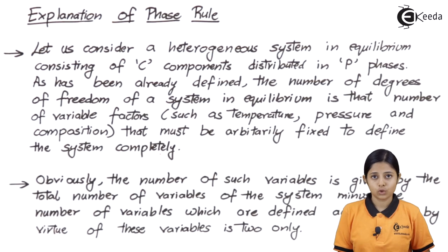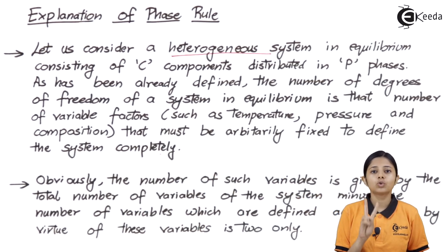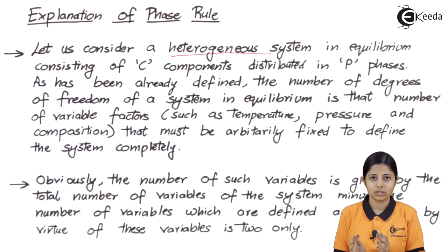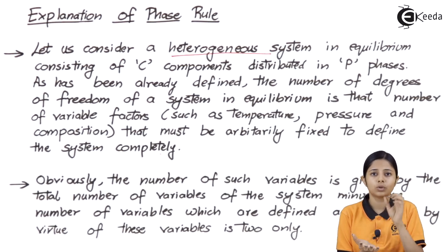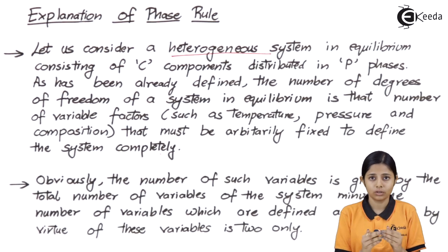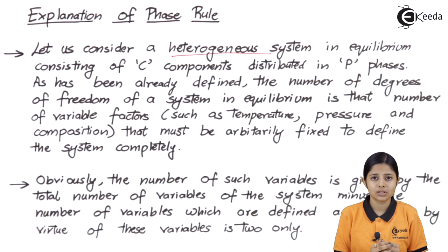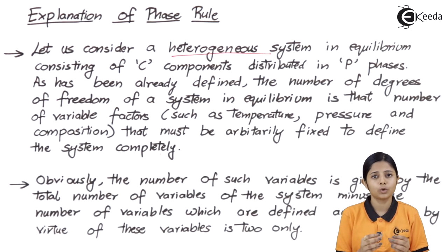Let us see the explanation of this phase rule in detail. Let us consider a heterogeneous system. We have two kinds of systems: homogeneous and heterogeneous. For a homogeneous system, if I take water and add some salt to it and stir it, the salt will dissolve completely into the water. After complete dissolution, we call that system homogeneous, because when we look at the water it is just one liquid phase — we do not see any crystals of salt. If we could see those crystals, it would be a heterogeneous system.